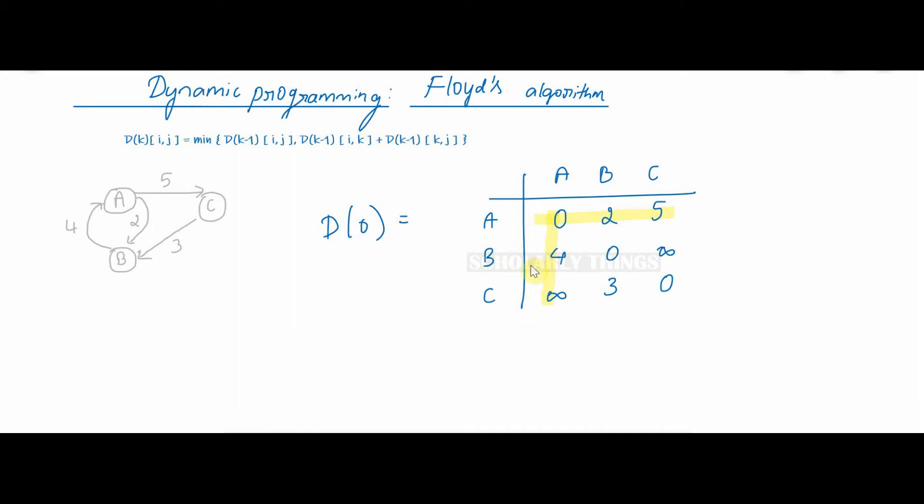In the first round k is equal to 1. Vertex 1 can be intermediate node. You can find out d1(2,3) as minimum of d0(2,3), d0(2,1) plus d0(1,3). d0(2,3) is infinity. d0(2,1) is 4 plus d0(1,3) is 5. Minimum of infinity and 9 is 9. So we just found out d1(2,3) to be 9. 9 goes here.